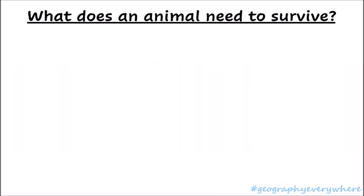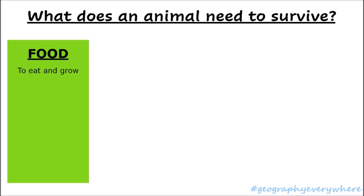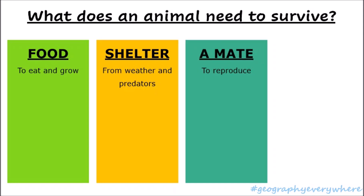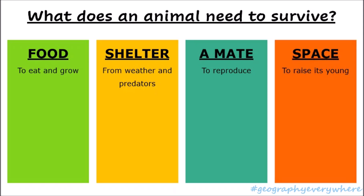What does an animal need to survive? An animal needs four things: it needs food to eat and grow, shelter from weather and predators, a mate to reproduce, and some space to raise its young.